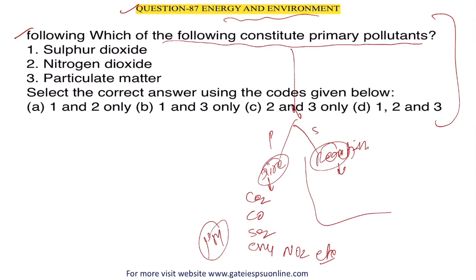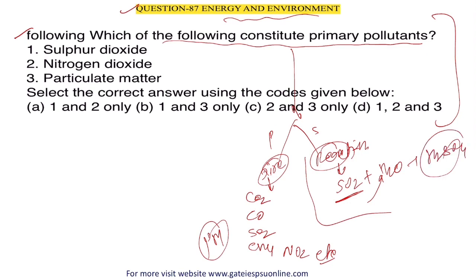For secondary pollutants: when primary pollutants mix with different particles or undergo chemical reactions, we get different pollutants known as secondary pollutants. For example, SO₂ is a primary pollutant. When SO₂ mixes with H₂O, it creates H₂SO₄, which causes additional pollution — this is a secondary pollutant.